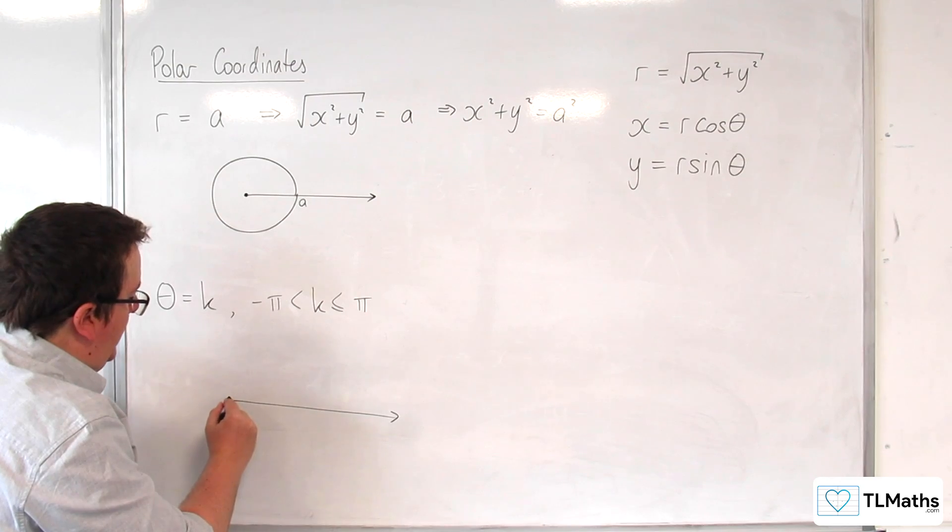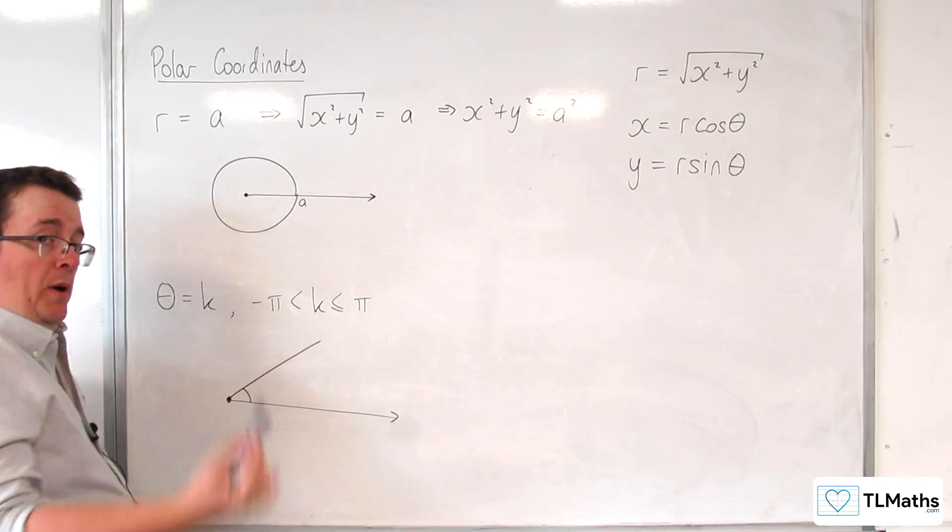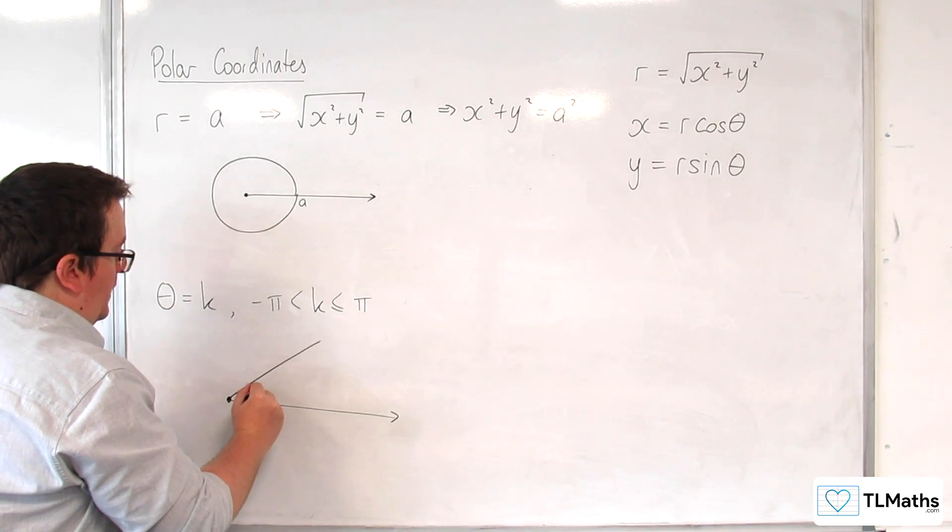In which case, it would be any point on this line, where this is the angle pi over 4, or just our theta. So here's theta.